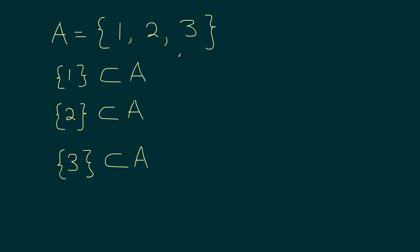Now, what about if we take two elements together: 1 and 2. Is this a subset of A? Answer is yes, because this set contains 1 and 2, and we have 1 and 2 here. Similarly, we can say {2,3} and {1,3}. So all of them are subsets of A.